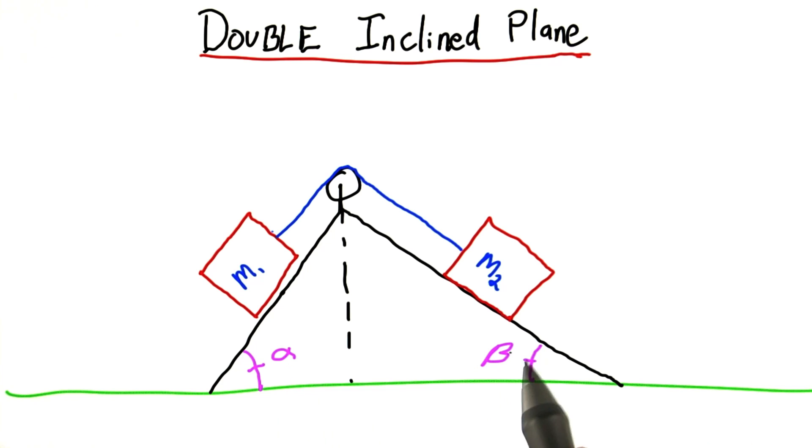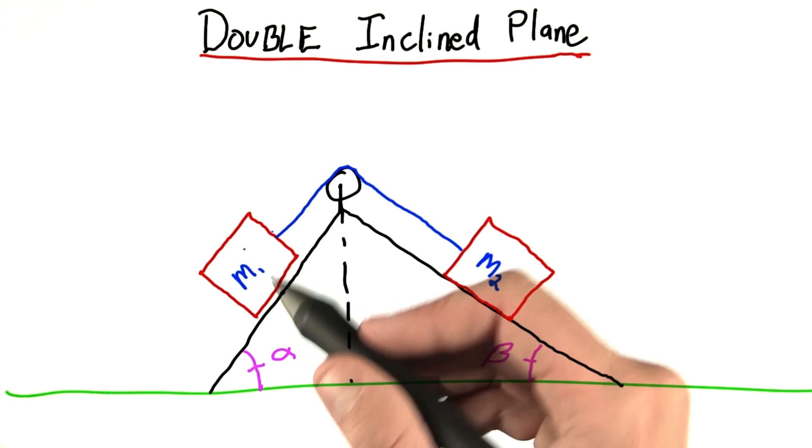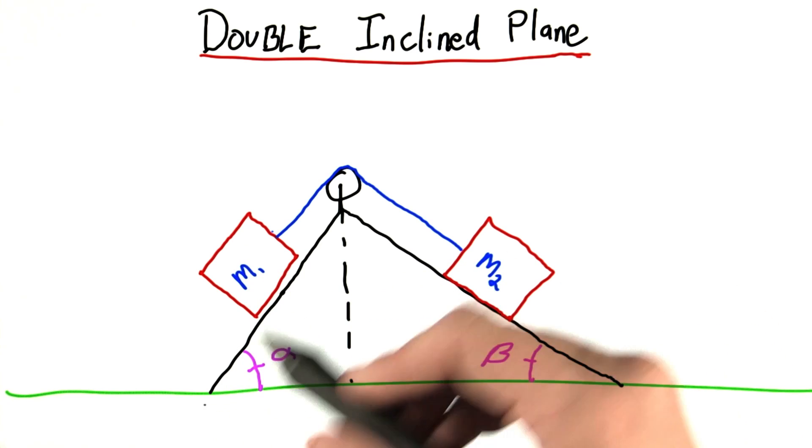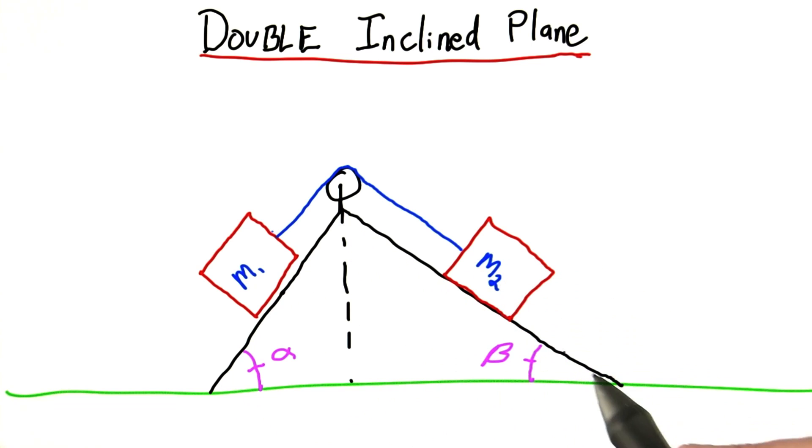One inclined at an angle alpha, and one inclined at an angle beta. We have two masses, M1 and M2. And of course, we're pretending like there's no friction, because we just don't want to deal with that right now.